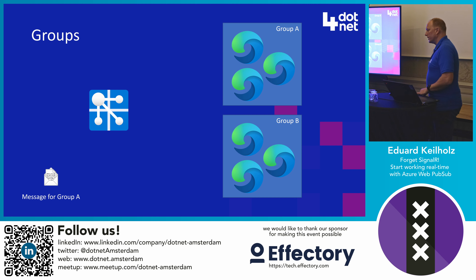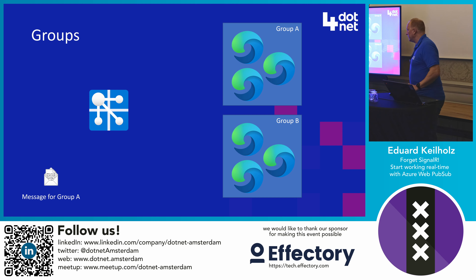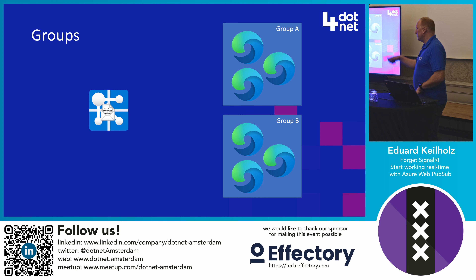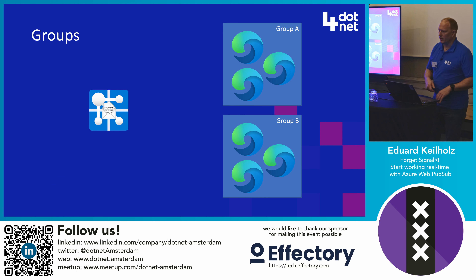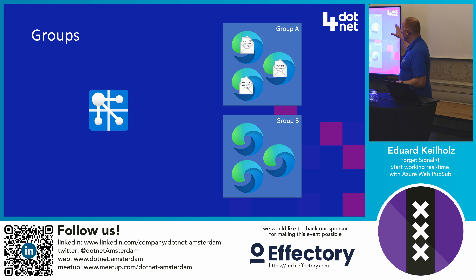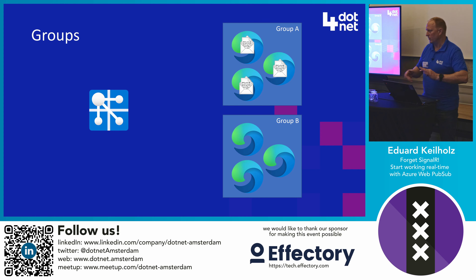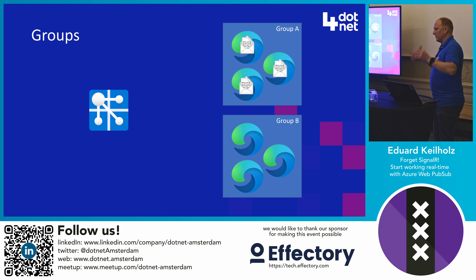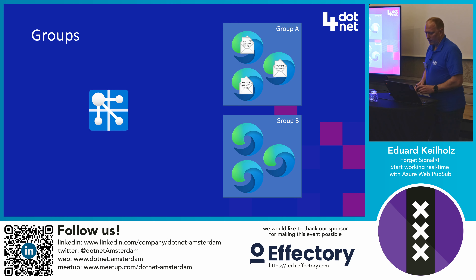How does a group work? In this example there are two groups, A and B, and a message in the bottom left that targets group A. You send the message to Web PubSub and it understands that the message needs to arrive at everyone in group A. You can also be a member of multiple groups simultaneously, so there's no need to create a large number of groups for complex targeting scenarios.